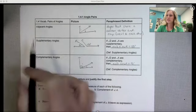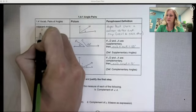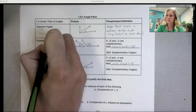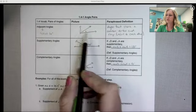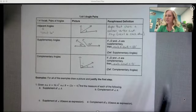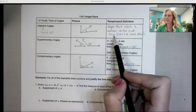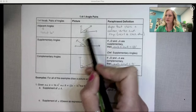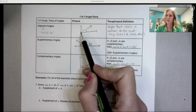So adjacent is another word that just means next to. So these are two angles right next to each other. They have to share a side, so they're always going to have a common vertex and a ray. Like angles 1 and 2 are sharing this ray and this endpoint.